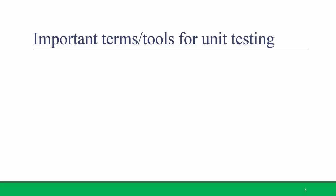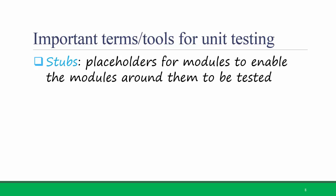Here are a couple more important terms and tools for unit testing. Stubs are placeholders for modules to enable the modules around them to be tested. For example, if we were testing the assignment module but we hadn't yet created the grading module, we could have a grading stub in place so that when we clicked a button that says Grade Assignment, it would just take us to a page that says the grading module would be here.